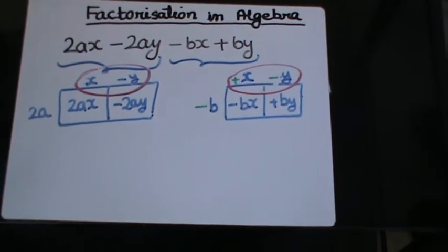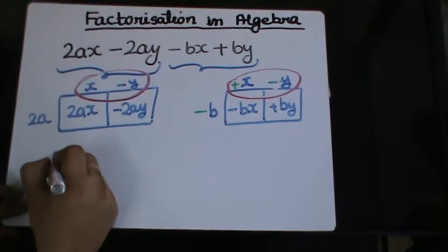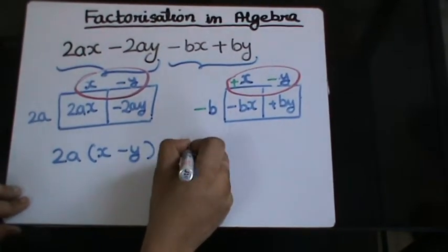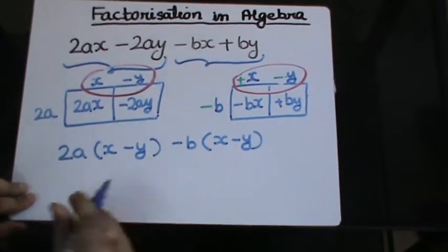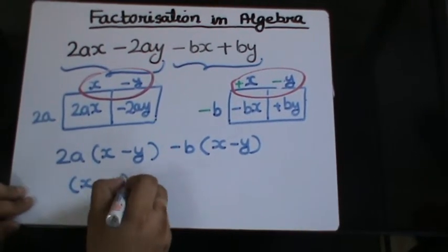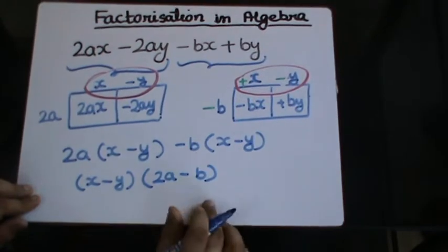And hence I will now have these terms with me 2a(x minus y) and negative b(x minus y). Now x minus y is common in both the terms. So x minus y and 2a minus b gives me the final factorization.